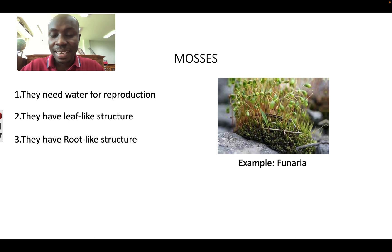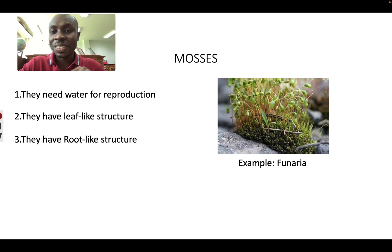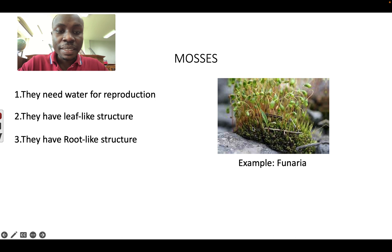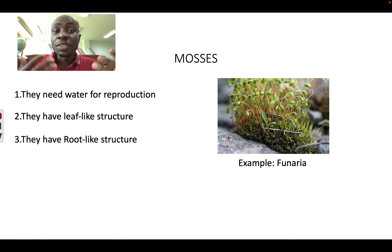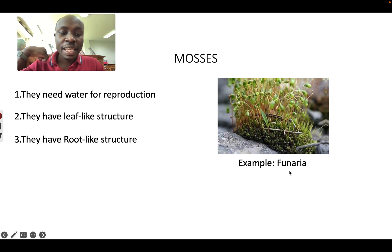Let's talk about mosses. Like we already said, all bryophytes including mosses need water for reproduction — the sperm has to swim in the water to join with the egg. Mosses also have leaf-like structures, as you can see in the picture — it looks like a leaf but it is leaf-like, not a true leaf. And they also have root-like structures, again not true roots but just look like roots. An example we will look at is funaria.